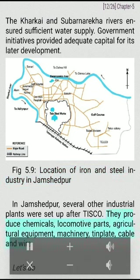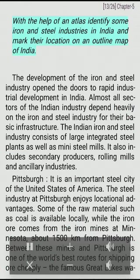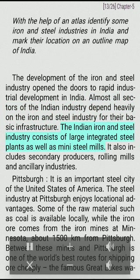In Jamshedpur, several other industrial plants were set up after TISCO. They produce chemicals, locomotive parts, agricultural equipment, machinery, tin plate, cable, and wire. The development of the iron and steel industry opened the doors to rapid industrial development in India. Almost all sectors of the Indian industry depend heavily on the iron and steel industry for their basic infrastructure. The Indian iron and steel industry consists of large integrated steel plants as well as mini steel mills. It also includes secondary producers, rolling mills, and ancillary industries.